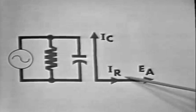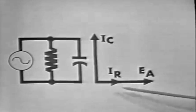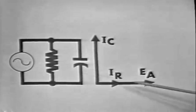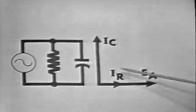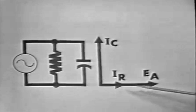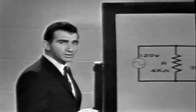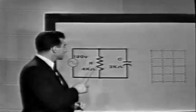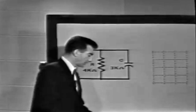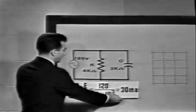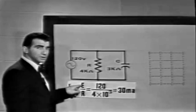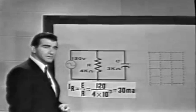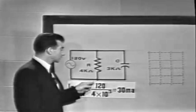In parallel, as in series, the voltage is the reference vector. The voltage across a parallel branch is the same, so EA becomes the reference vector, and the branch currents will show the phase differences. Now let's examine a circuit with given component values. We'll calculate the branch currents and plot this information vectorially on our graph. The current through each branch can be easily determined by applying Ohm's law. IR may be found by dividing the voltage by resistance: 120 volts over 4K ohms gives us 30 milliamps through the resistive leg.